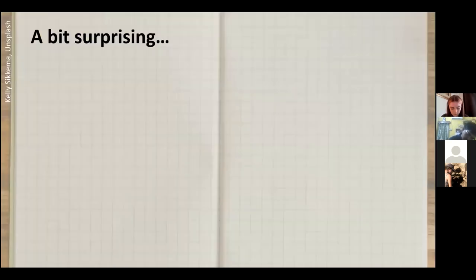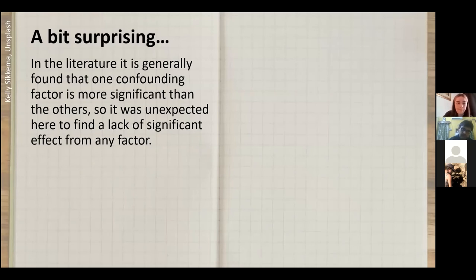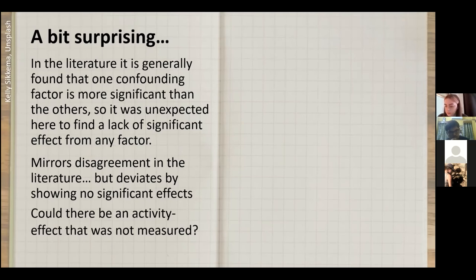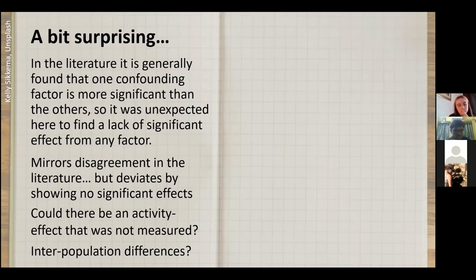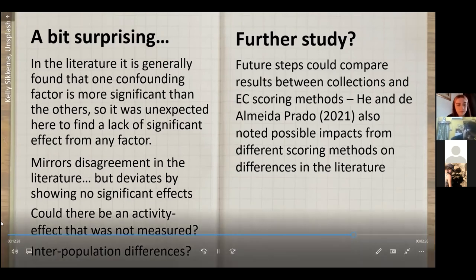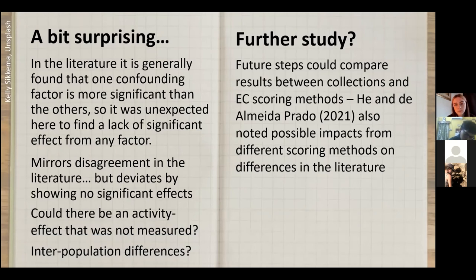I won't lie — I was a bit surprised by this result. I was expecting at least one of the factors to have a significant effect based on the literature's reports. I wondered if there was an unmeasured variable that had a significant effect on the EC score, for example activity or population differences. There are lots of potential avenues for future research. I am particularly interested in exploring interpopulation variation between identified skeletal collections and also the use of different EC scoring methods between studies, as I think these could have contributed significantly to the literature's disagreement over confounding factors.